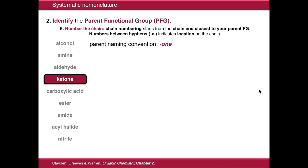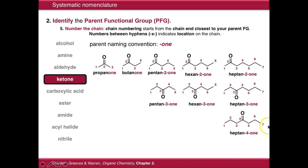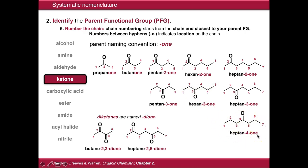Ketones are named with -one at the end of the molecule. So here we have propanone, butanone, and then we get into ones that can form isomers: pentan-2-one and pentan-3-one, hexan-2-one, hexan-3-one. Notice that if we move to position four we'd have to renumber the chain, so you can't have hexan-4-one, but we can have heptan-4-one because we've now got more carbons in the chain. Diketones are named -dione — just put the numbers between the hyphens, so this is heptane-2,5-dione.